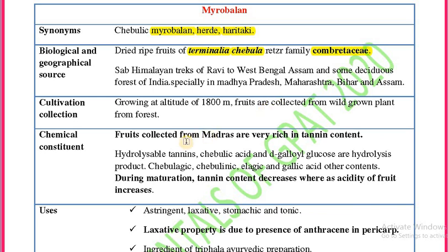Moving directly to the chemical constituents: fruits collected from the Madras region consist of high tannin content. It consists of hydrolyzable tannins. The hydrolysis products include chebulic acid and D-galloyl glucose. Other constituents are chebulic acid, chebulinic acid, ellagic acid, and gallic acid.